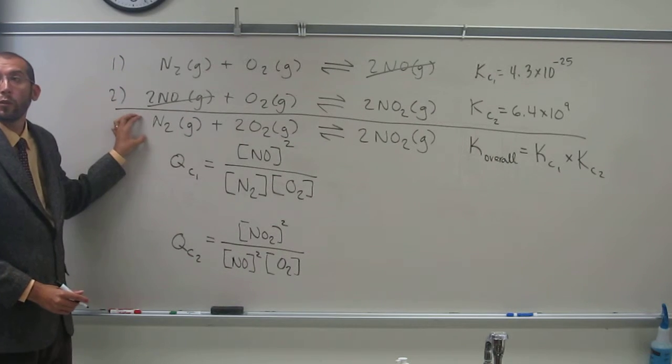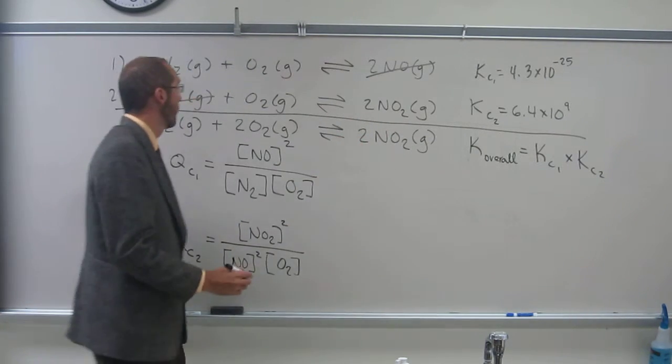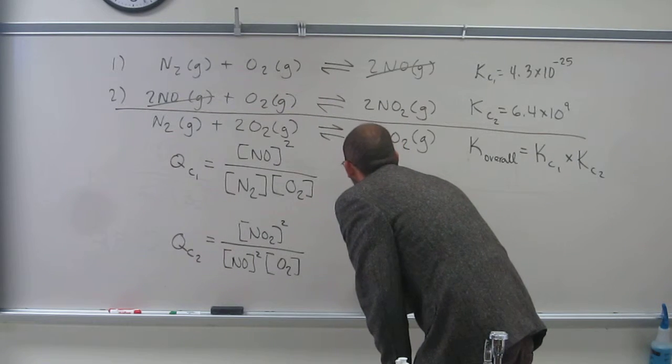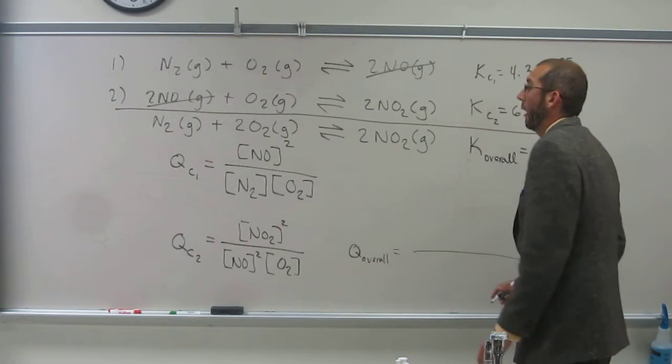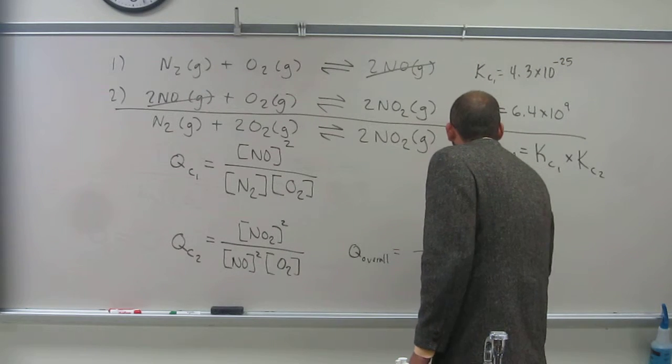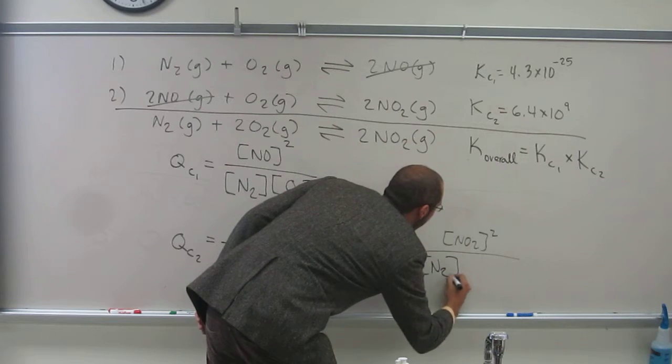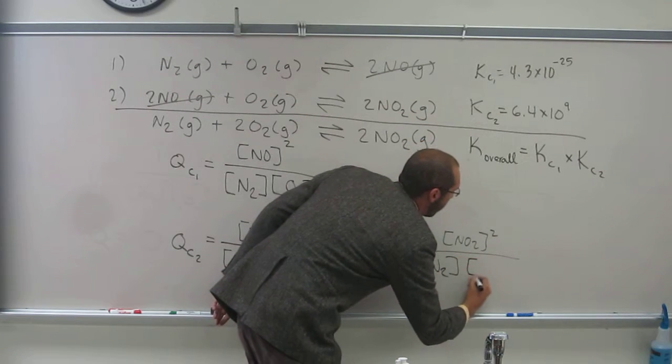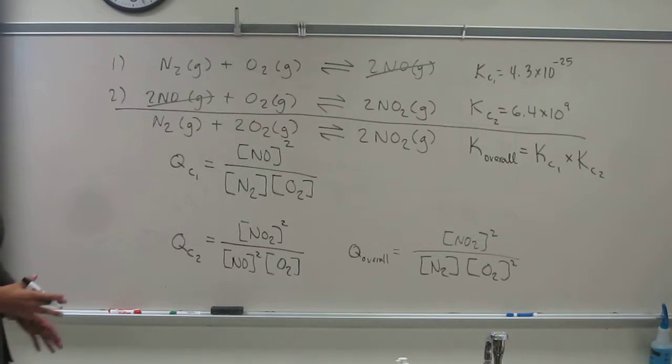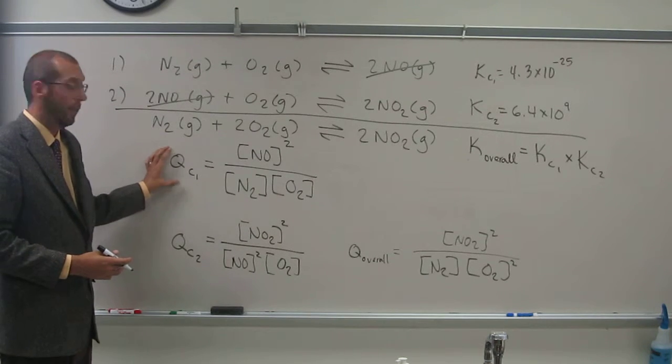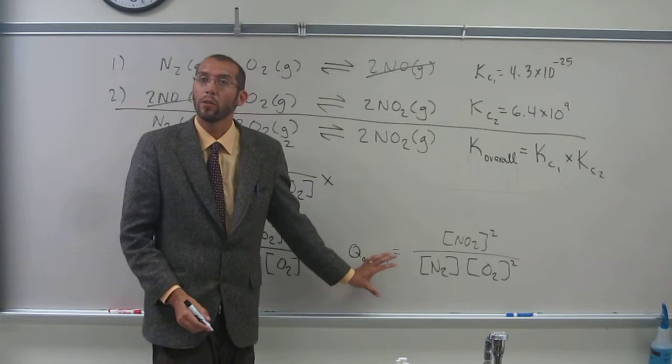So let's figure out what the Q for this reaction sequence is, or this reaction is down here. So overall reaction. I'm going to say Q overall down here. And I'm going to write on the top NO2 squared, denominator times nitrogen times O2 squared. Would everybody have written that one? Wonderful. So I want to show you something. If I take QC1 and QC2 that we've gotten here and I multiply those together, I should get the QC overall.